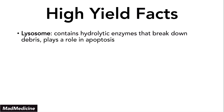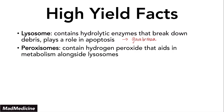Then we have lysosomes. Lysosomes contain hydrolytic enzymes that break down debris. They also play a role in apoptosis. I like to think of lysosomes as the garbage men, because they are essentially breaking things down. And then we also have something related called a peroxisome. Peroxisomes contain hydrogen peroxide, which aids in metabolism alongside lysosomes. So these are also essentially garbage men — garbage men number one and garbage men number two.